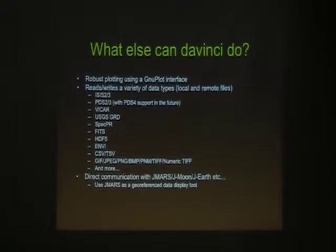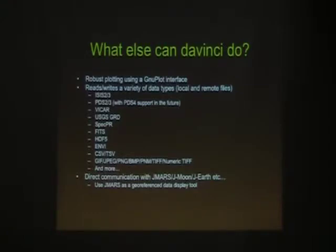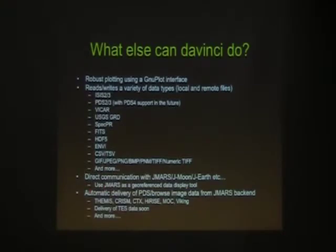Something unique to DaVinci at this point is it really does have direct communication with JMars, JMoon, and all the different J products that Arizona State University's Mars Space Facility develops. You can actually use JMars as a georeferenced data display tool from DaVinci. You're processing inside DaVinci with a JMars instance running — you manipulate your data, and it pops up in JMars. We also have automatic delivery of PDS-browse image data from the JMars backend that DaVinci can tie into, including instruments like EMAS, CRISM, CTX, HiRISE, and Viking, and more.